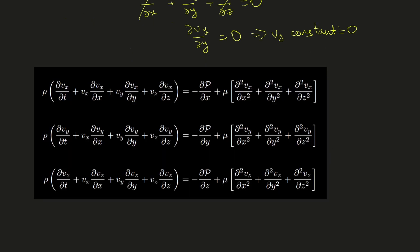The next step is to use the Navier-Stokes equation. This is a standard equation in flow problems — most fluid mechanics or transport phenomena textbooks will have a table of these in different coordinate systems. We're in the Cartesian coordinate system, and these equations address velocity components in the x, y, and z directions.